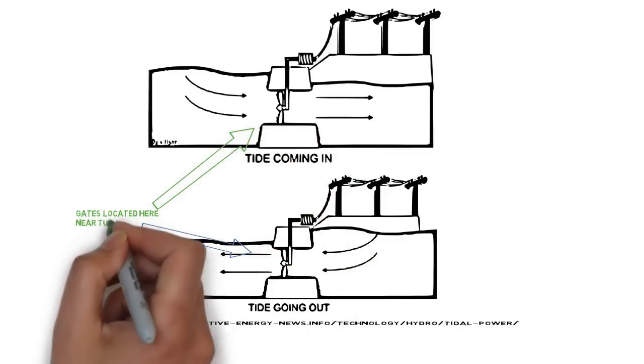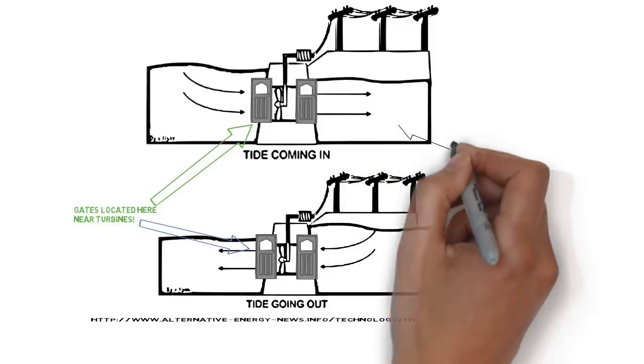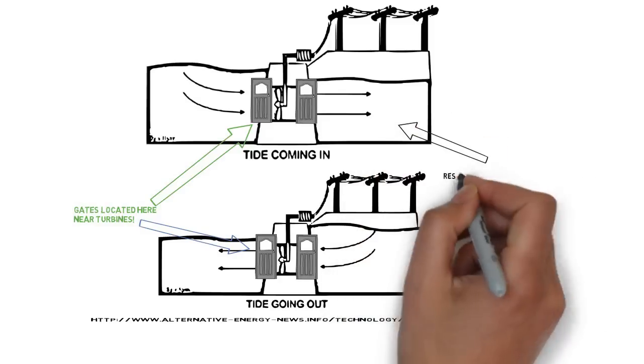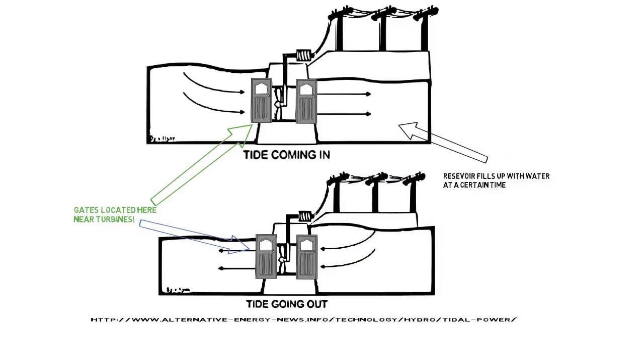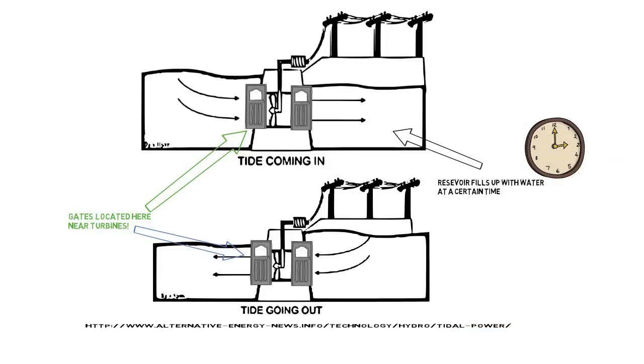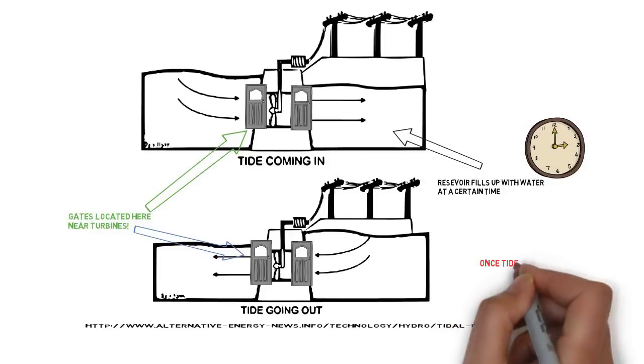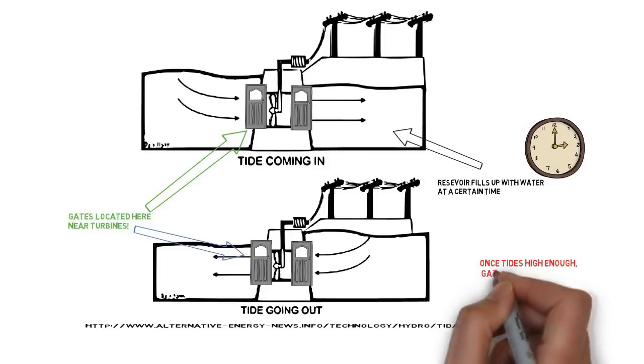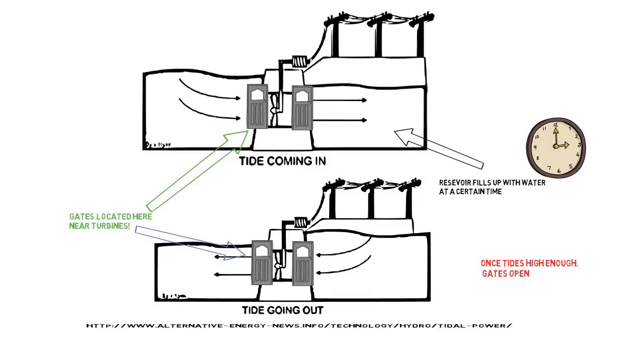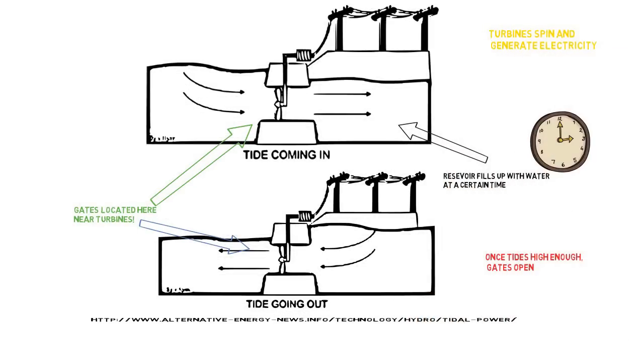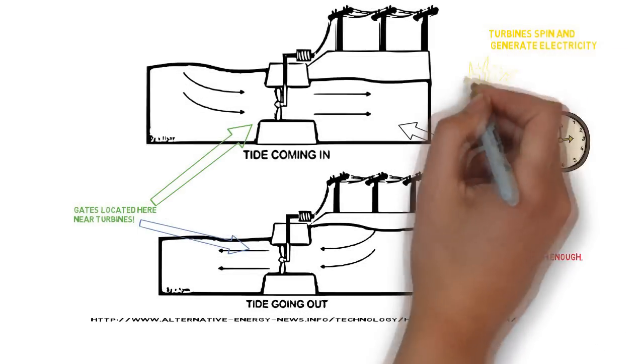Moveable floodgates called sluice gates on the dam allow incoming tidal waters to fill up in a reservoir. Once the water reaches its maximum level, the gates close and trap the water. When the certain time arrives, the water inside the reservoir will form tides. Once they are high enough, the gates open and allow water to flow through the turbines, and thus producing electricity.